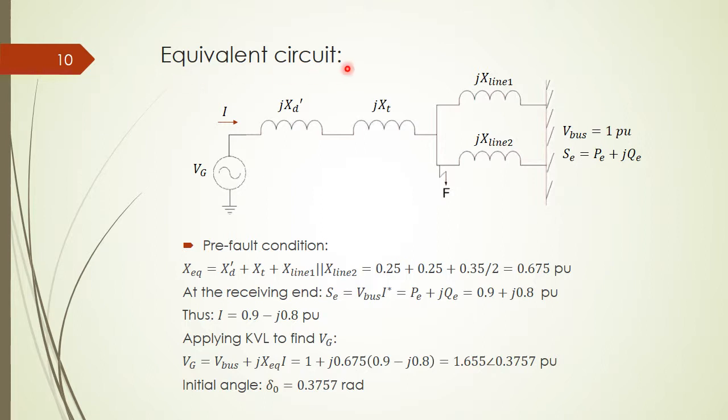So first we draw the equivalent circuit. The generator will be represented as a voltage source V_g in series with a reactance X_d prime. The transformer will be replaced with an inductor jX_t. Two transmission lines will be redrawn as two reactances X_line1 and X_line2 in parallel.